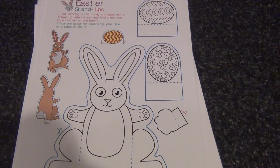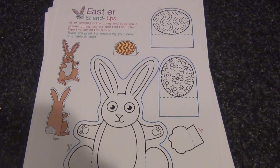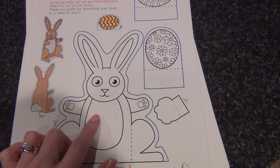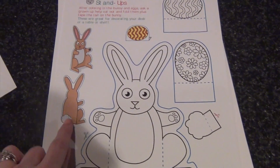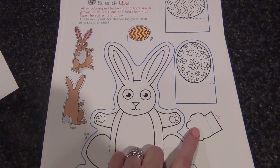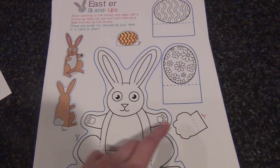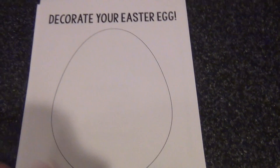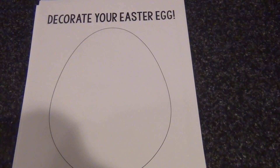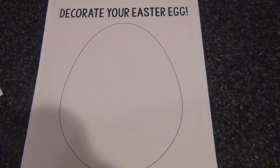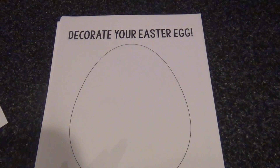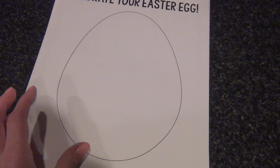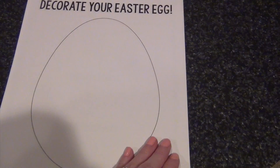I want to keep it fun too, so we're going to be making these little Easter bunny standups. I printed this on cardstock — they can color it whatever color they want, put a cotton ball for the little tail, and they can decorate the eggs. We did this last year and they really liked it, so it's decorate your own Easter egg. We've used sequins and glitter and all different stuff — they can really do however they want.